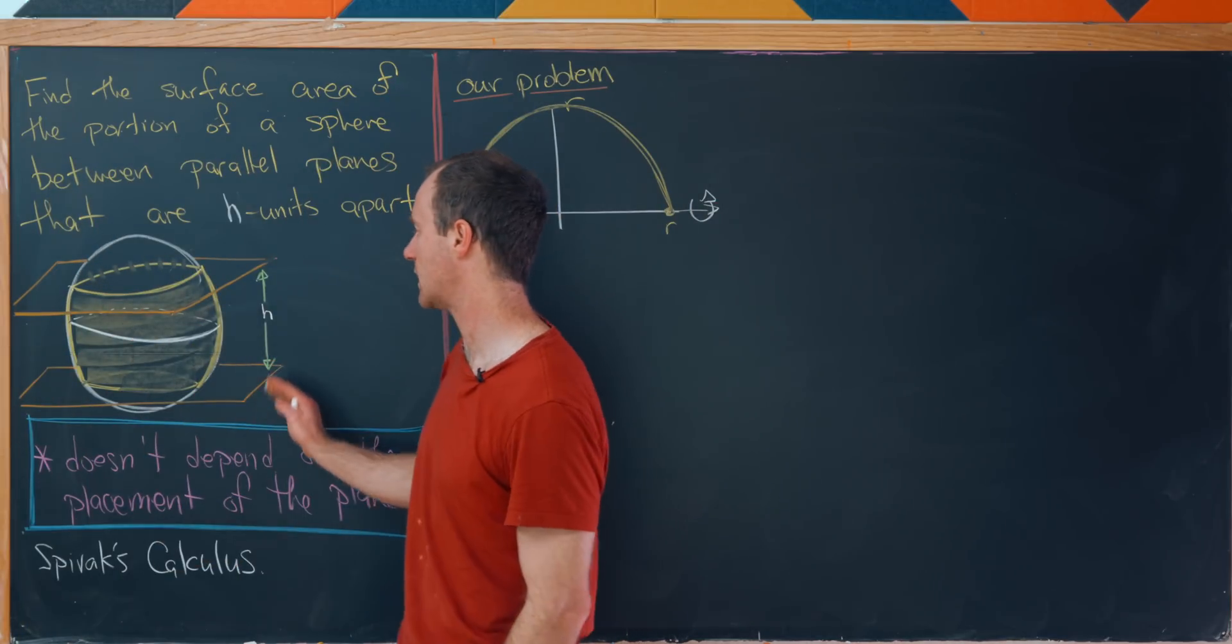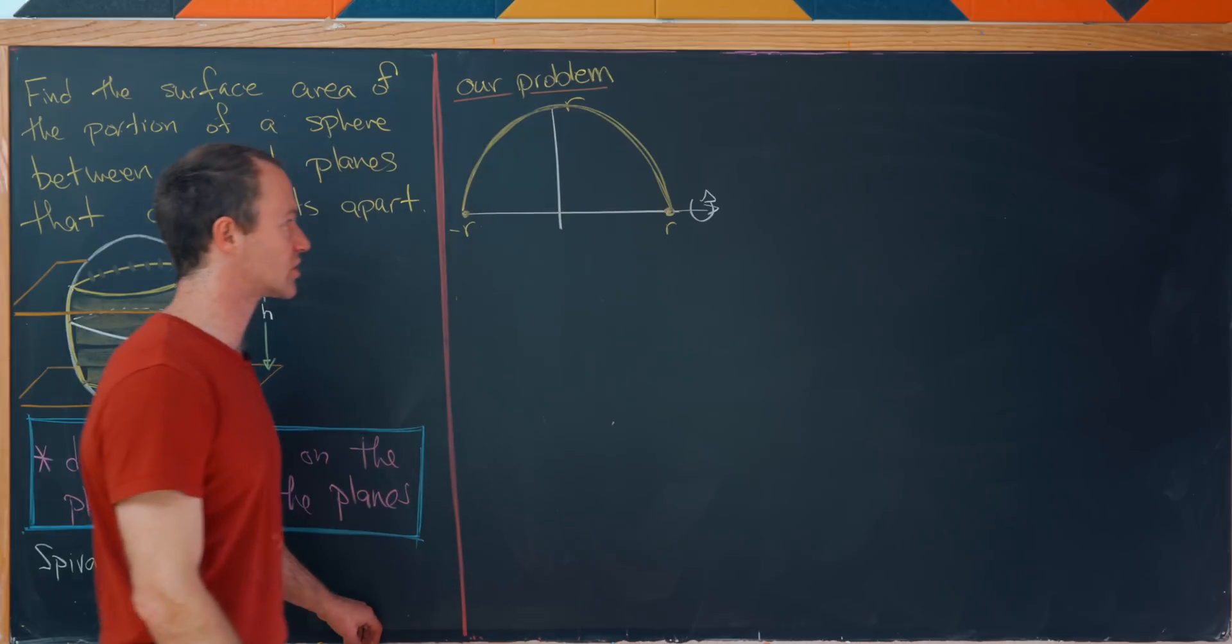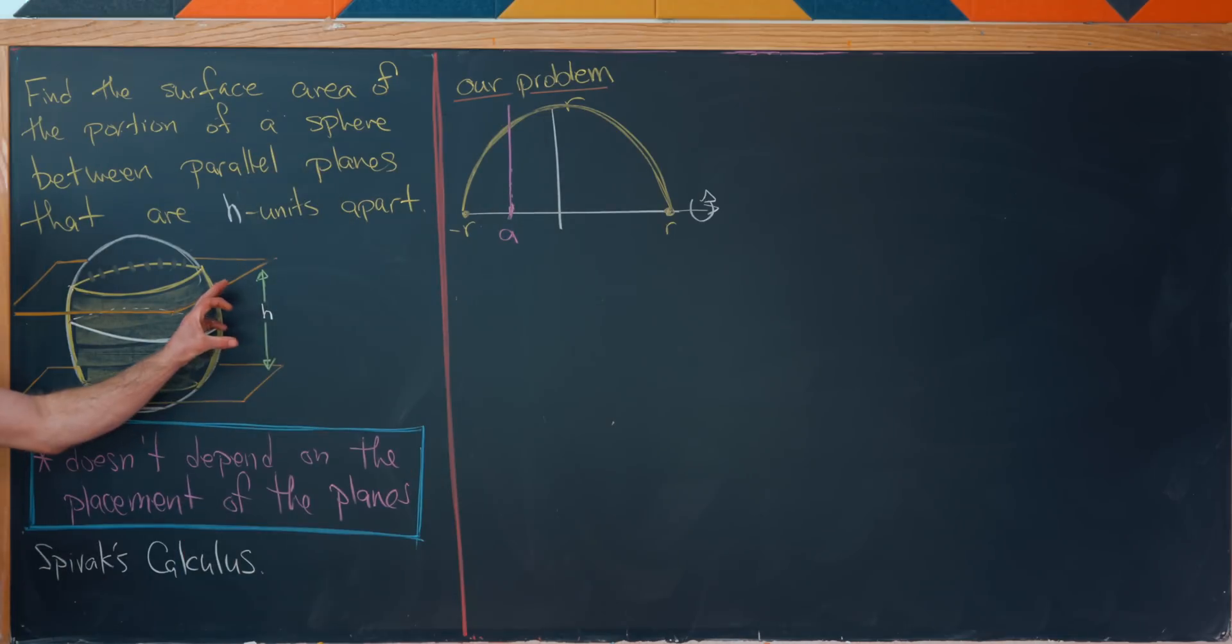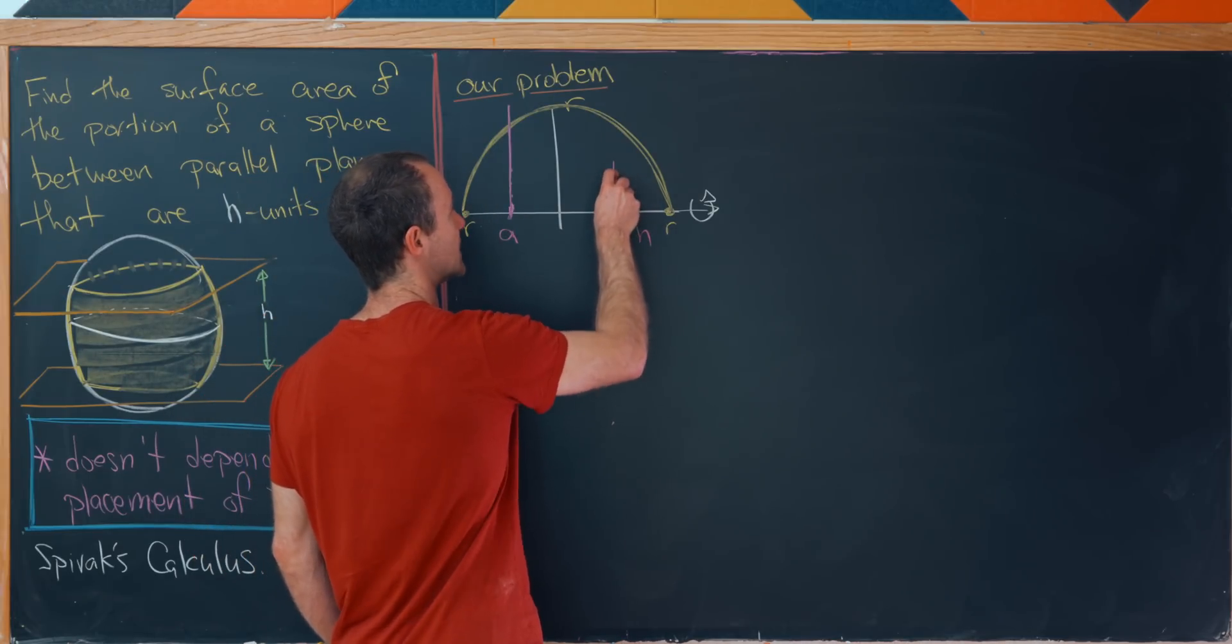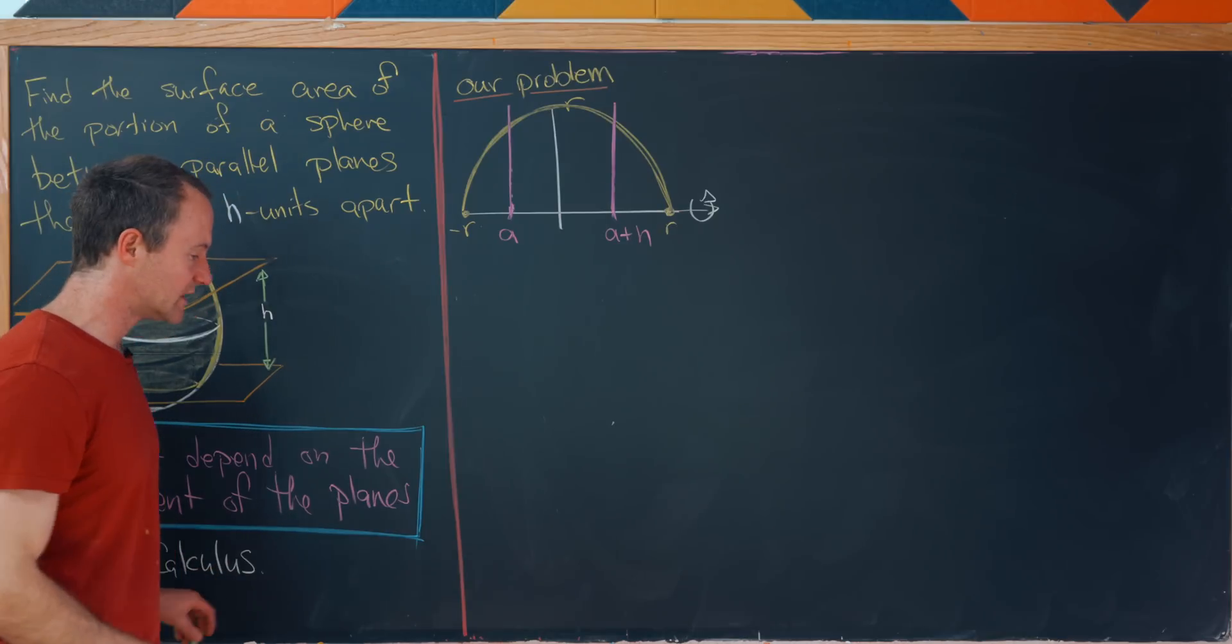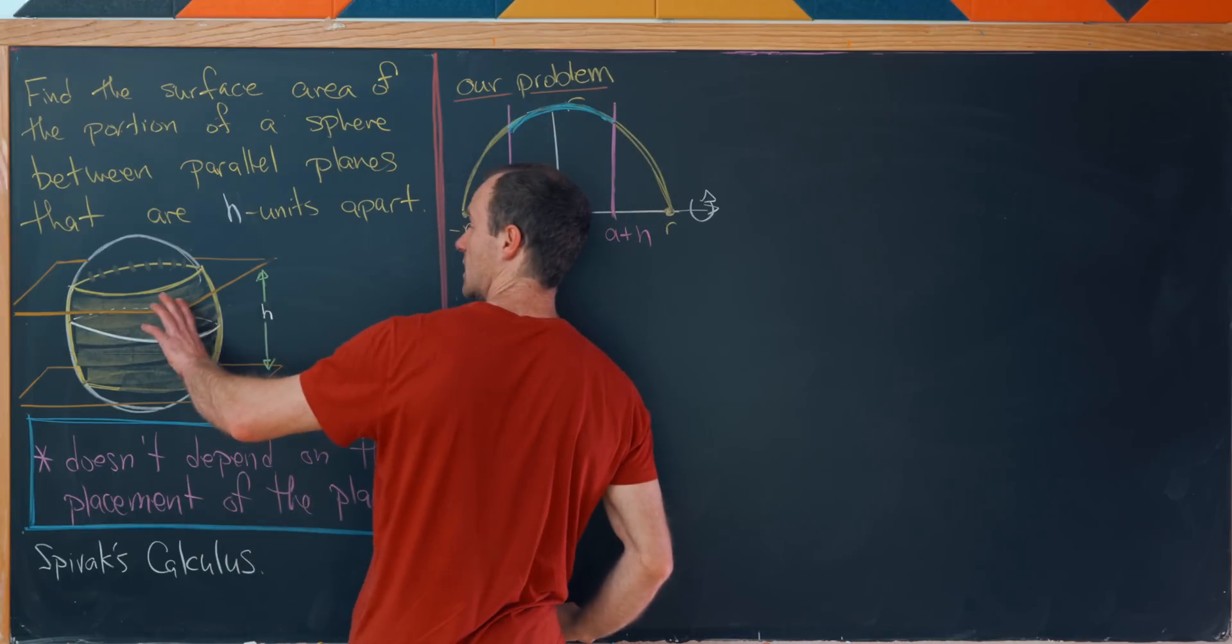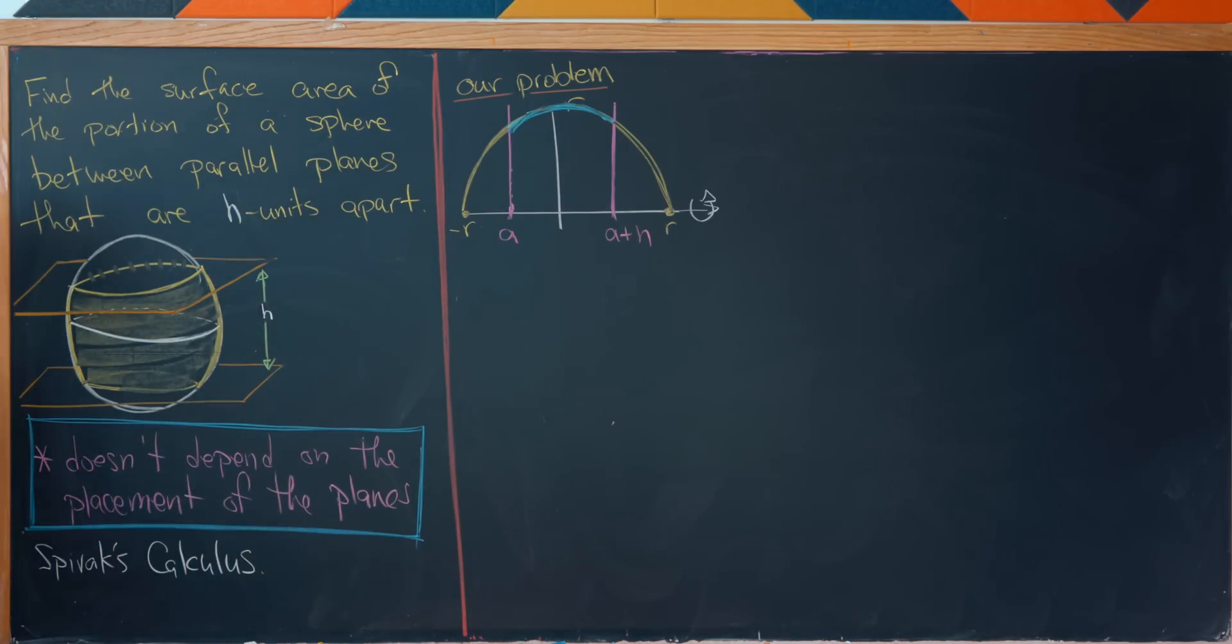But then how do we cut this with two parallel planes? Well, here I've put these parallel planes running horizontally, but I could also put them running vertically. And maybe that's a better picture for our setup. I'll pick some sort of random spot between minus r and r, and I'll put a vertical line. And that will be related to my plane. And I want planes to be separated by h units. So I'll go h units to the right, and I'll put another plane, a plus h. And I guess the important thing here is that these numbers a and a plus h are between minus r and r. But I think that's kind of okay. And now let's really look at what's going on. Now, if we rotate this portion, which I am shading in blue, we'll see that we would get exactly what we want.